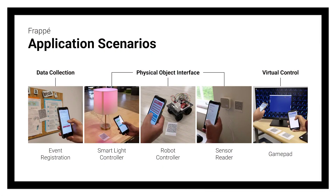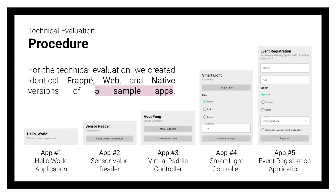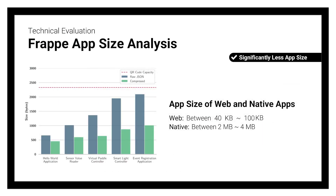Our framework can support various application scenarios such as data collection, physical object interfaces, and virtual controls. We performed a technical evaluation of our framework, where we compared the performance of five sample Frappe apps against identical web and native applications. Since only the UI metadata of an app is stored in our framework, it results in significantly less app size, which can be stored within a QR code.